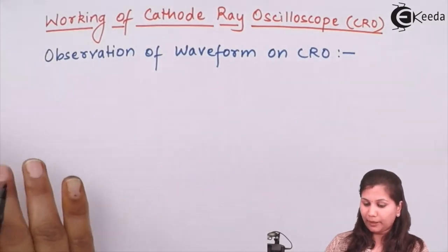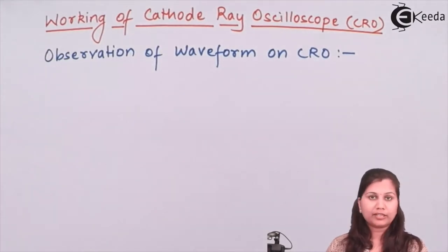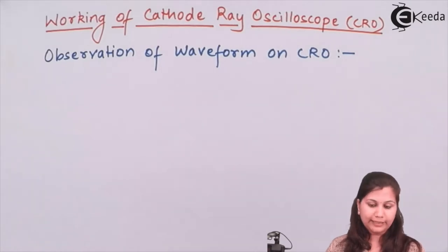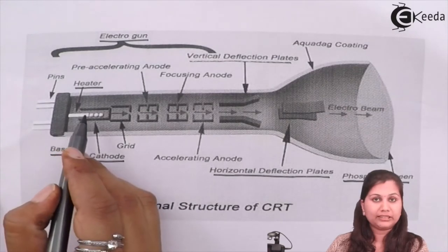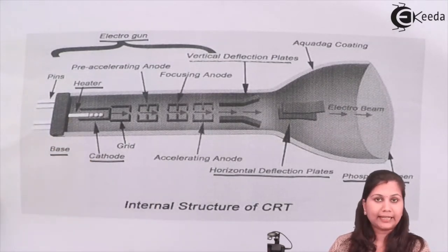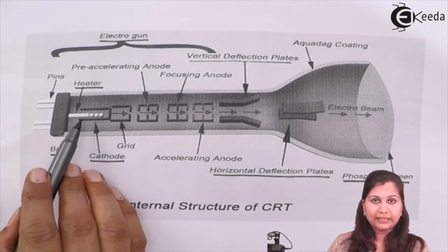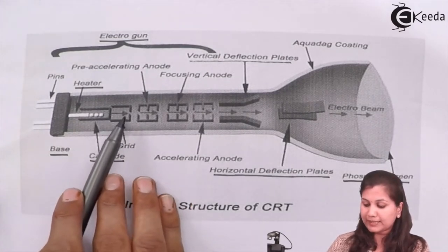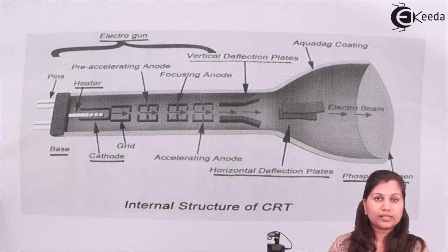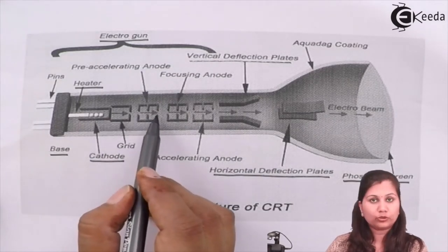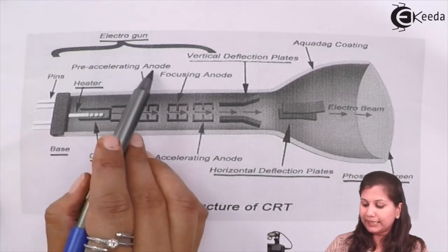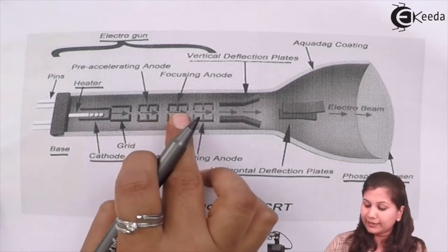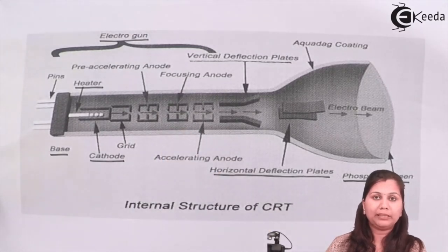The working begins when the CRO is connected to the power supply. When connected, the heater in the electron gun is heated up. This heater heats the cathode, and the cathode releases electrons. These electrons pass through the control grid, which controls the number of electrons passing through it. After that, the electrons pass through the pre-accelerating and accelerating anodes which accelerate the electrons, and then through the focusing anode which focuses the beam of electrons.